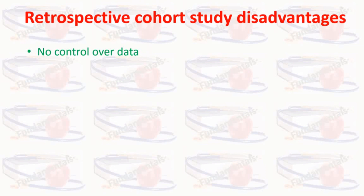Disadvantages of retrospective cohort study are that there is no control over the data and nothing can be done about missing data, because researchers gather data from records. Sometimes information on a variable of interest is simply not available.